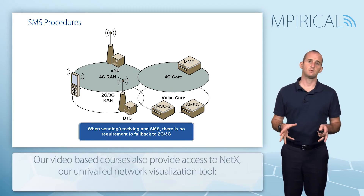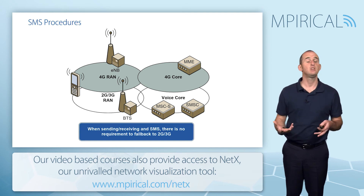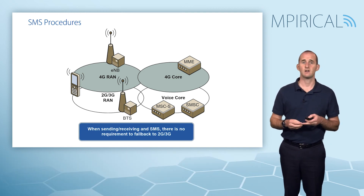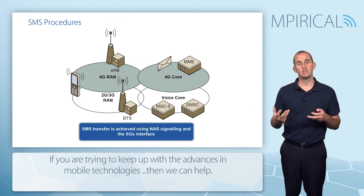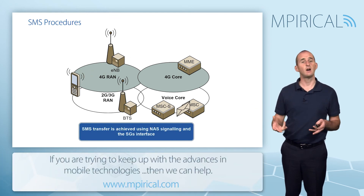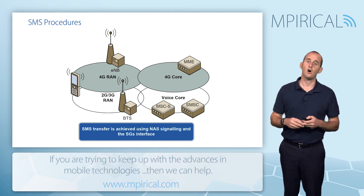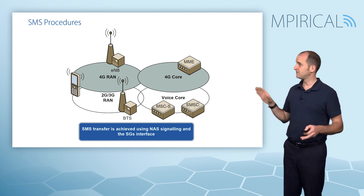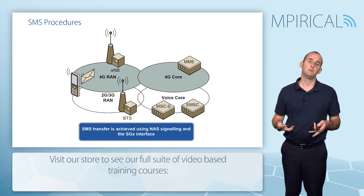With respect to SMS, remember there is no requirement to fall back to 2G or 3G access. When we send or receive an SMS with circuit switch fallback, the SMS is transported across the 4G network using non-access stratum signalling, and it gets from the 4G to the 2G or 3G voice call network using the SGS interface. This is the same regardless of whether it's a mobile originated or a mobile terminated text message.